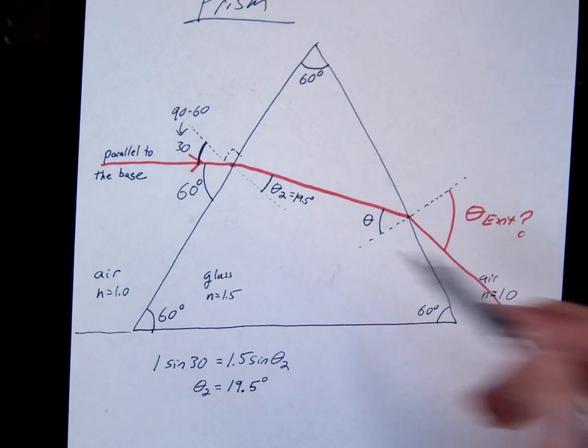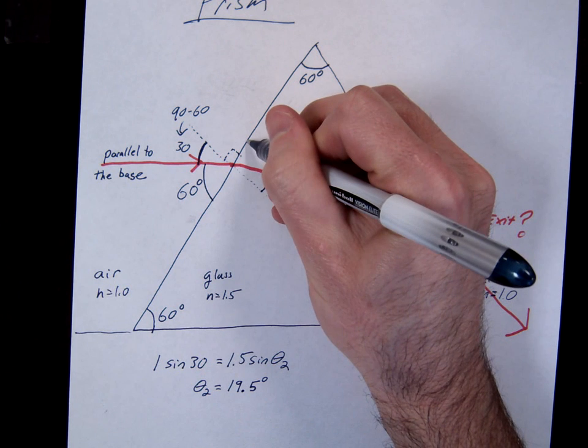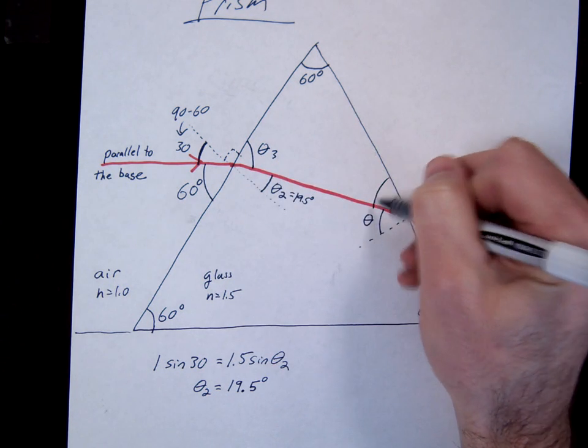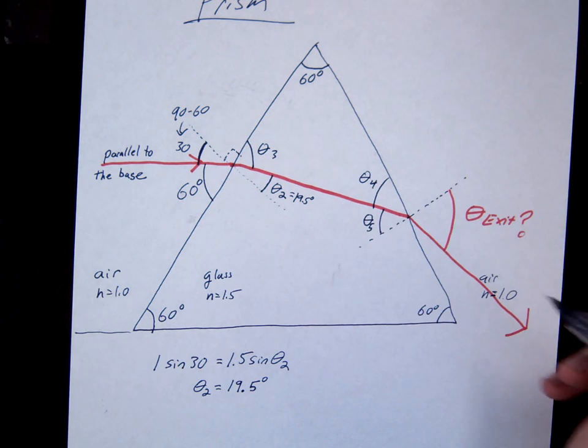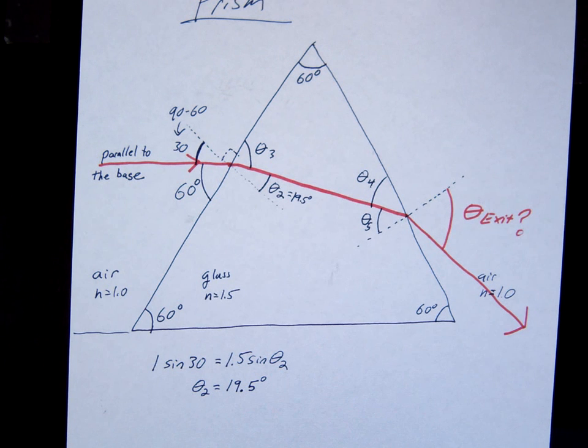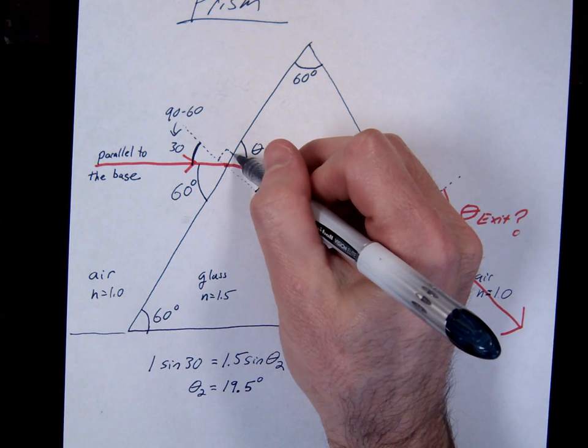Okay, so what we're going to do is we're going to work our way around this triangle here. Let's call this theta 2. We're going to call this theta 3, this theta 4, this theta 5. Now we're just going to use some simple basic geometry to work our way through this, and then Snell's law at the end. Okay, so let's do it.